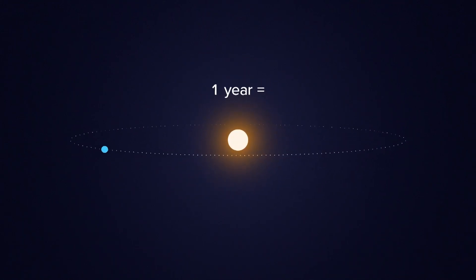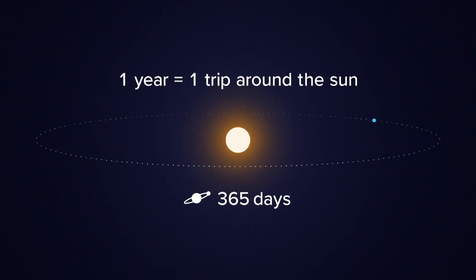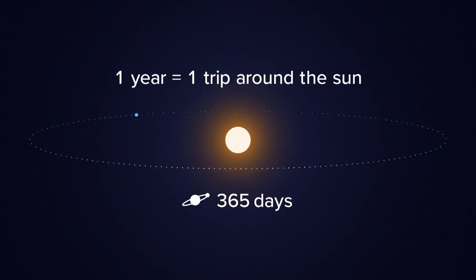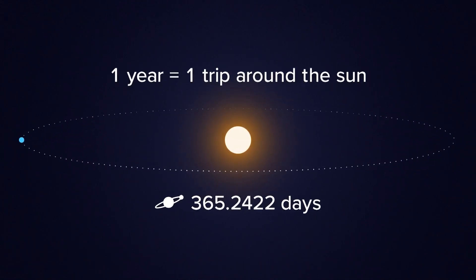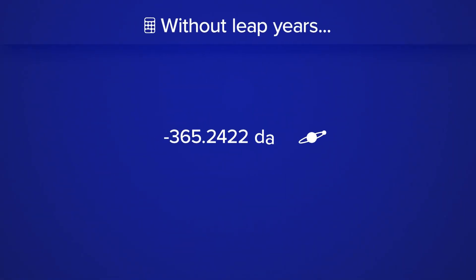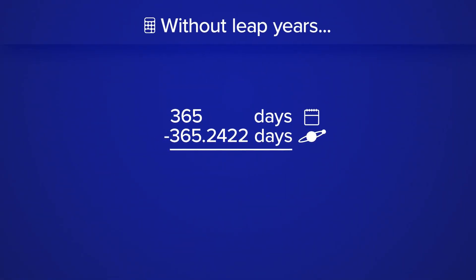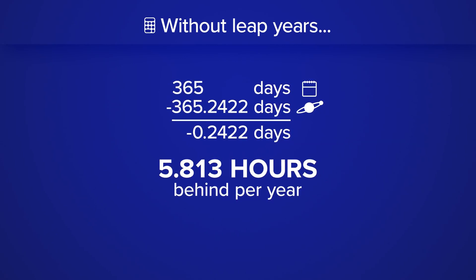The Earth takes one year to revolve around the sun — not exactly. It actually takes 365.2422 days. So when you subtract and find the difference, we're behind about 5.8 hours a year.